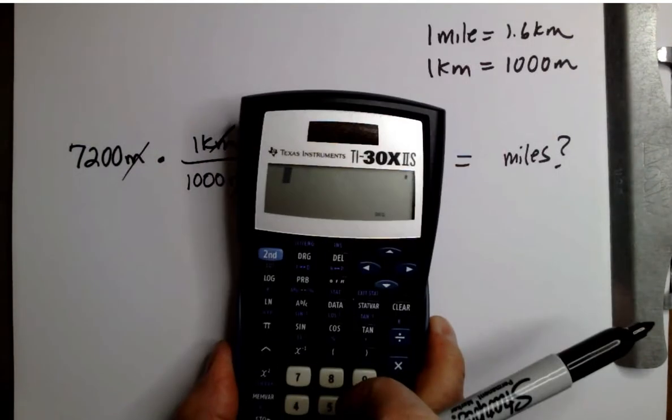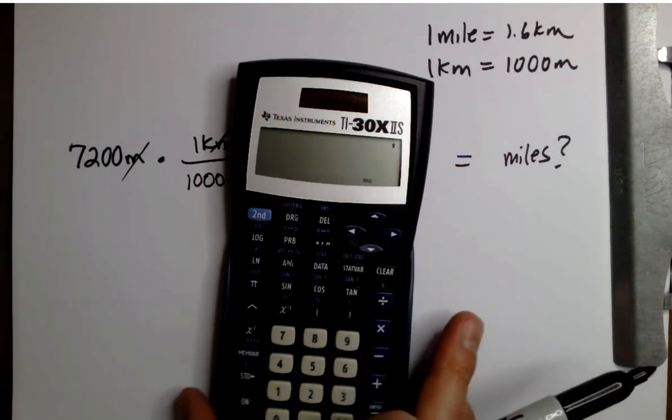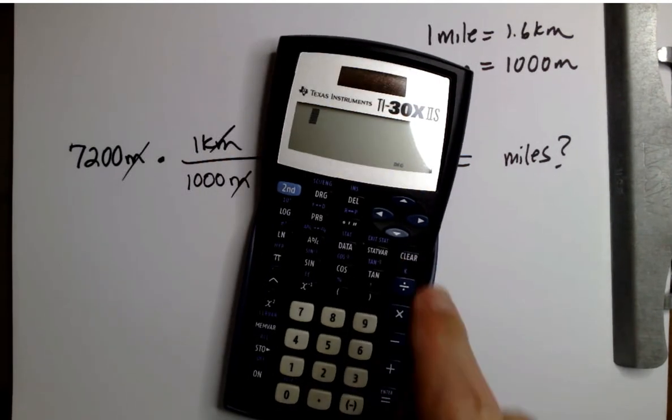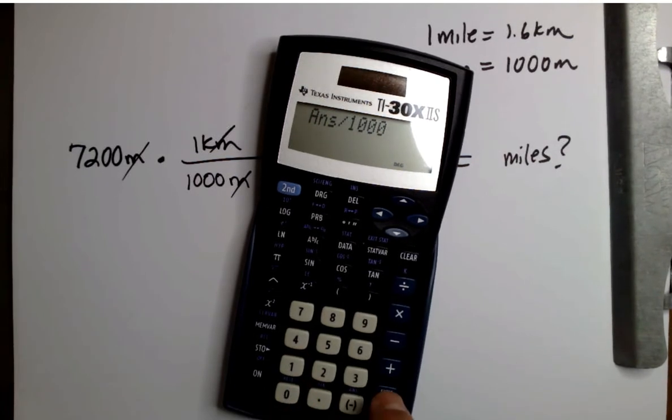So here we go. Notice that I have my calculator in degrees. So we're going to clear everything. We're going to say 7,200 times 1 enter, divided by 1,000 enter. Okay, I got 7.2 so far.